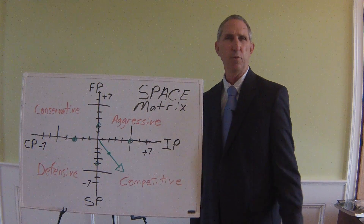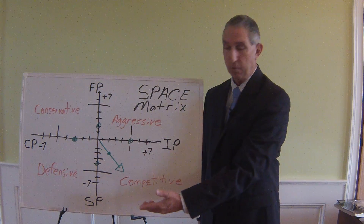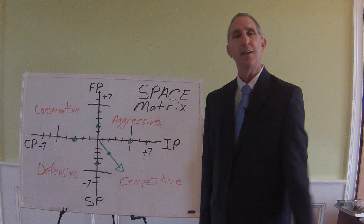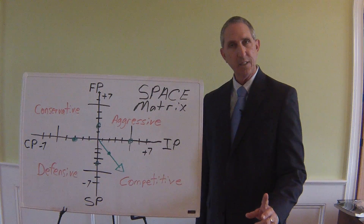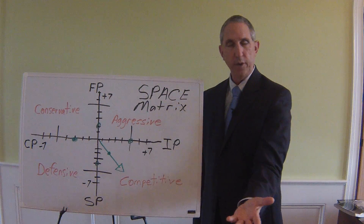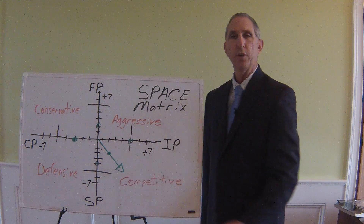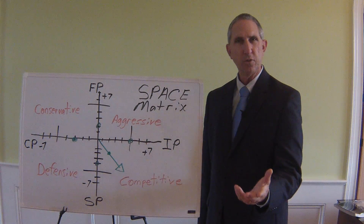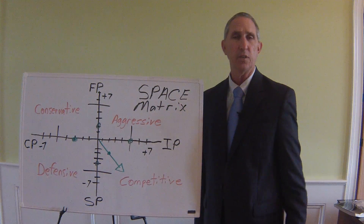Stability position refers to how stable the industry you're competing in is. For example, if it's vulnerable to technological change, it'd be very unstable and you'd rate your firm a minus seven — minus seven is not good, while a minus one or two is good. As you can see from the green dots placed here, you add the two coordinates on the x-axis and the two coordinates on the y-axis to plot a coordinate. Here we end up with plus two, minus two, and that's where this vector goes.